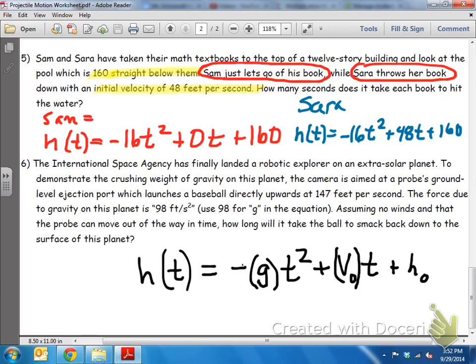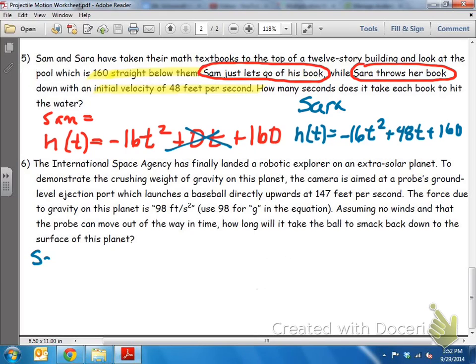So we have our two different equations. Let's first work on Sam, because we don't have the initial velocity to deal with. So Sam is going to be, because we want to find the height according to time when it hits the water. So the height would be zero, meaning the water's at the ground. So we want to find the height at zero.